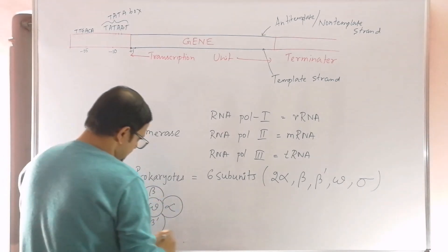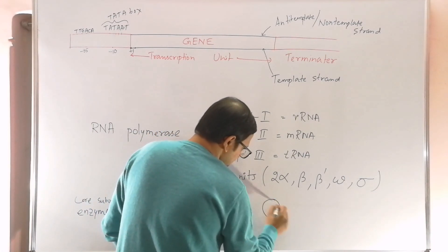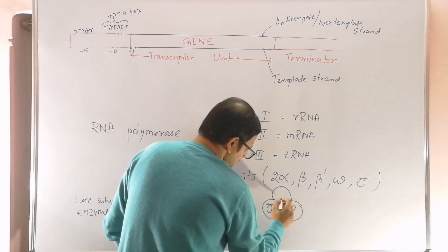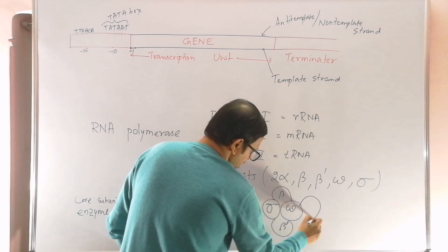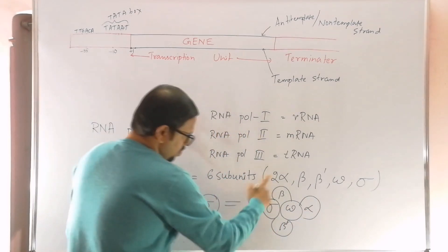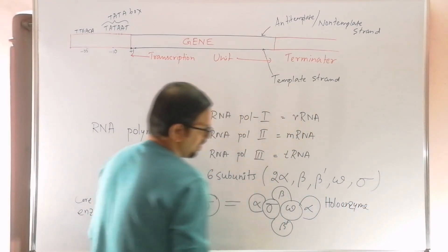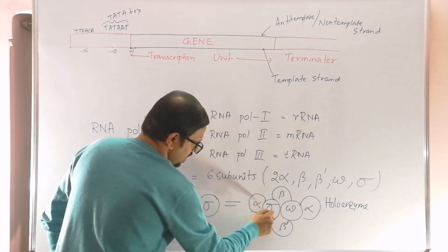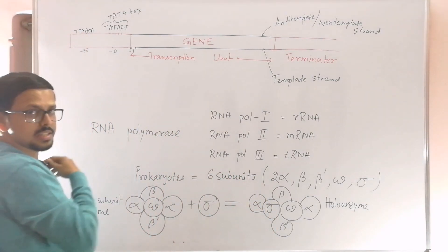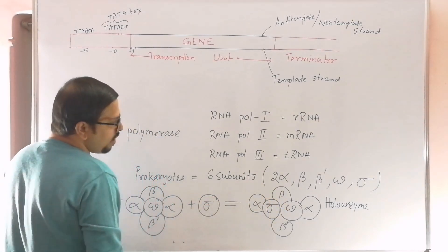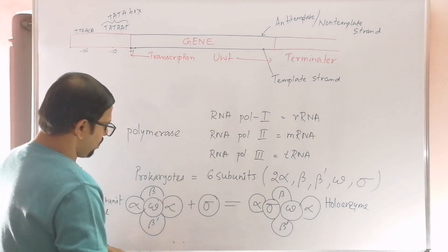When the 5 subunits — 2 alpha, beta, beta prime, and omega — come together without sigma, the structure is known as the core enzyme. When the sigma subunit is added, the complete structure is known as the holoenzyme. Out of the six subunits, the sigma subunit is most important because it recognizes the recognition sequence, ensuring that RNA polymerase binds only at the correct region.